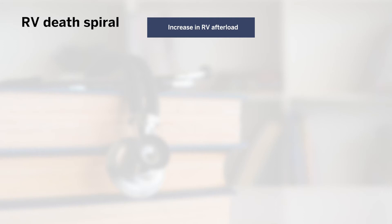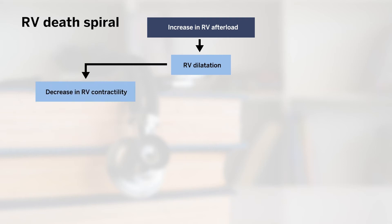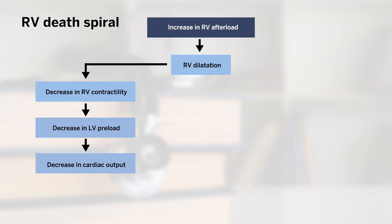When we think about RV dysfunction, we think about this sometimes in the form of a right ventricular death spiral. An increase in right ventricular afterload, or pressure, leads to right ventricular dilatation as seen in the prior imaging. When the right ventricle is dilated, its ability to contract decreases. This leads to bowing into the left ventricle, causing the left ventricle size to decrease and therefore a decrease in cardiac output.